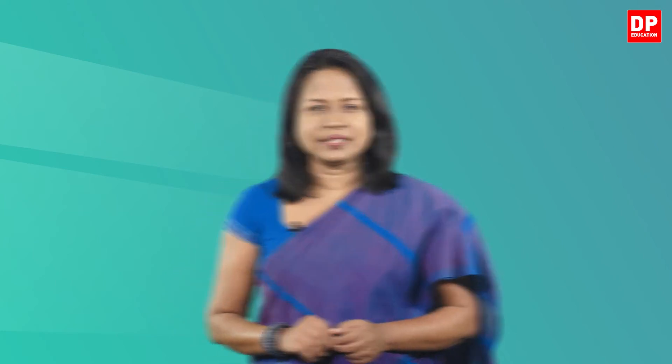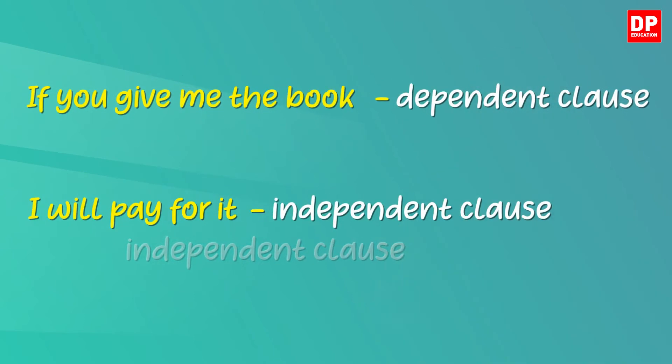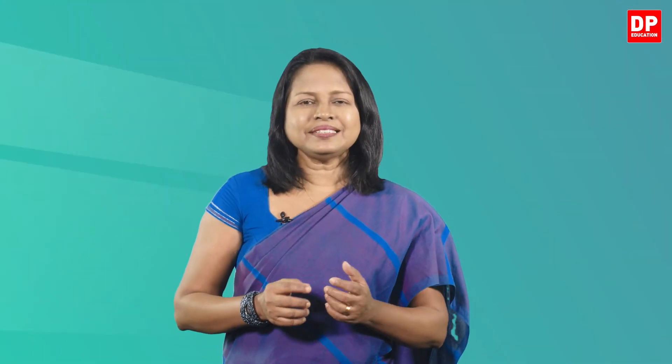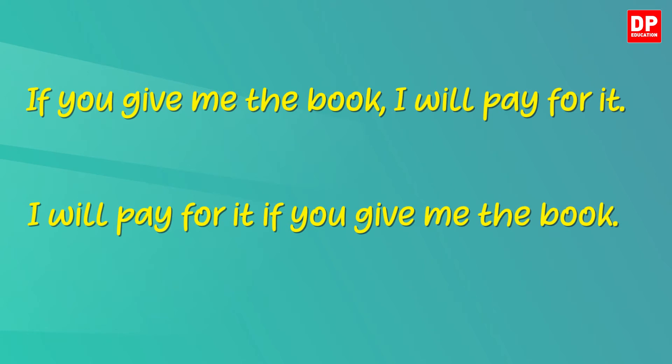The conditional clause, or the if-clause, is not a complete sentence. It is dependent on the result clause 'I will pay for it', which is an independent clause. In a sentence, either of these two clauses can come first. For example, in 'If you give me the book, I will pay for it', the condition is placed at the beginning and the result comes after. When the if-part comes first, the two parts are separated with a comma. When the result comes before the condition, we do not use a comma. Changing the order of the clauses does not change the meaning — both sentences mean exactly the same thing.